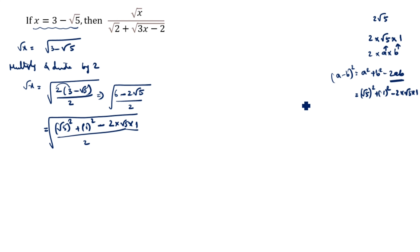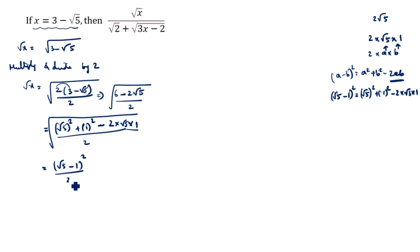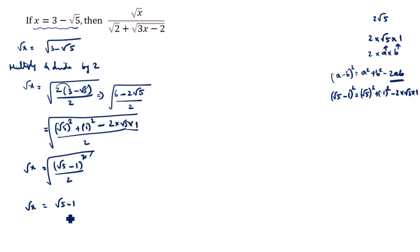This expression is (a minus b)², where a is √5 and b is 1. So we write it as (√5 minus 1)² divided by 2, under a square root. The square and root cancel, giving √x = (√5 minus 1) divided by √2. This is the √x value.